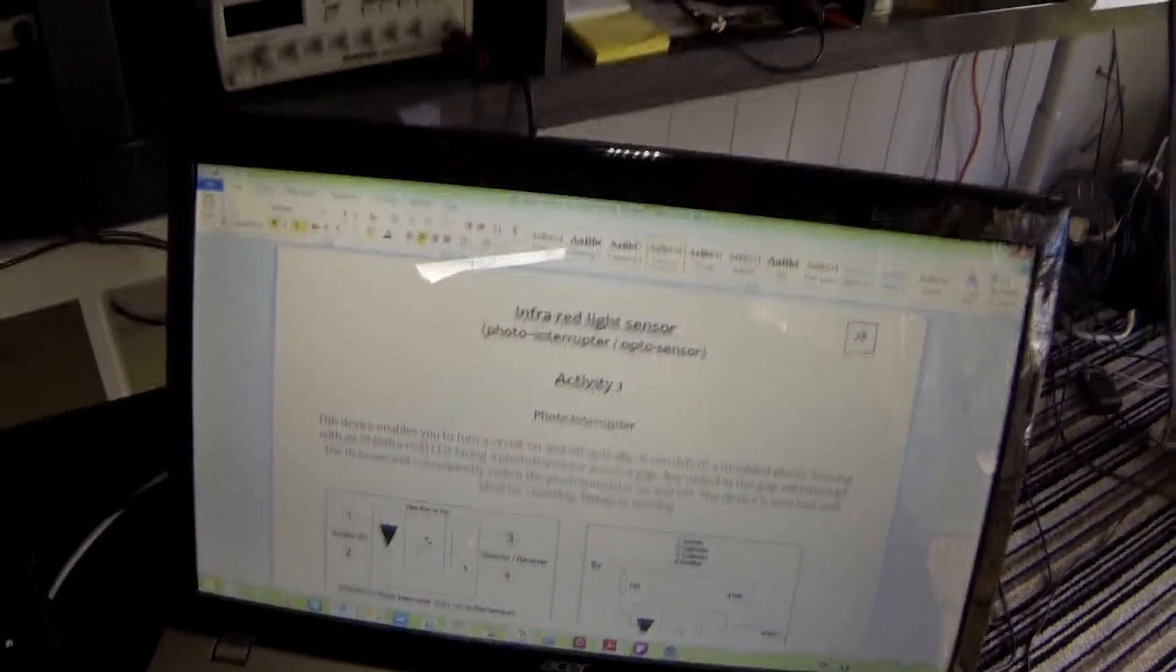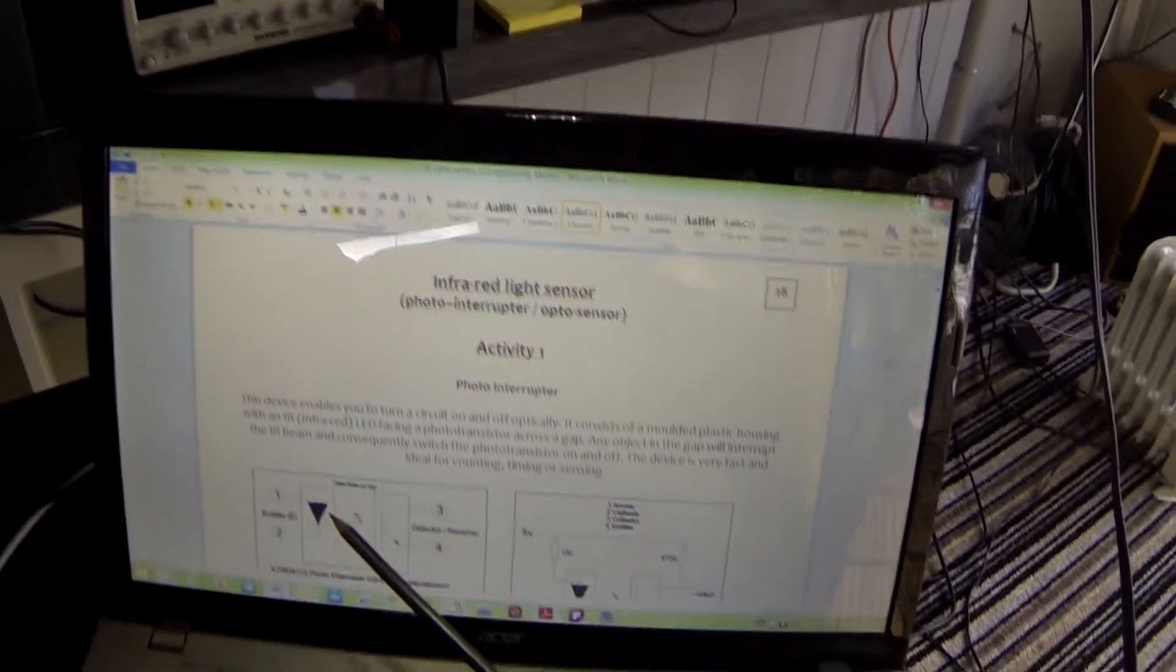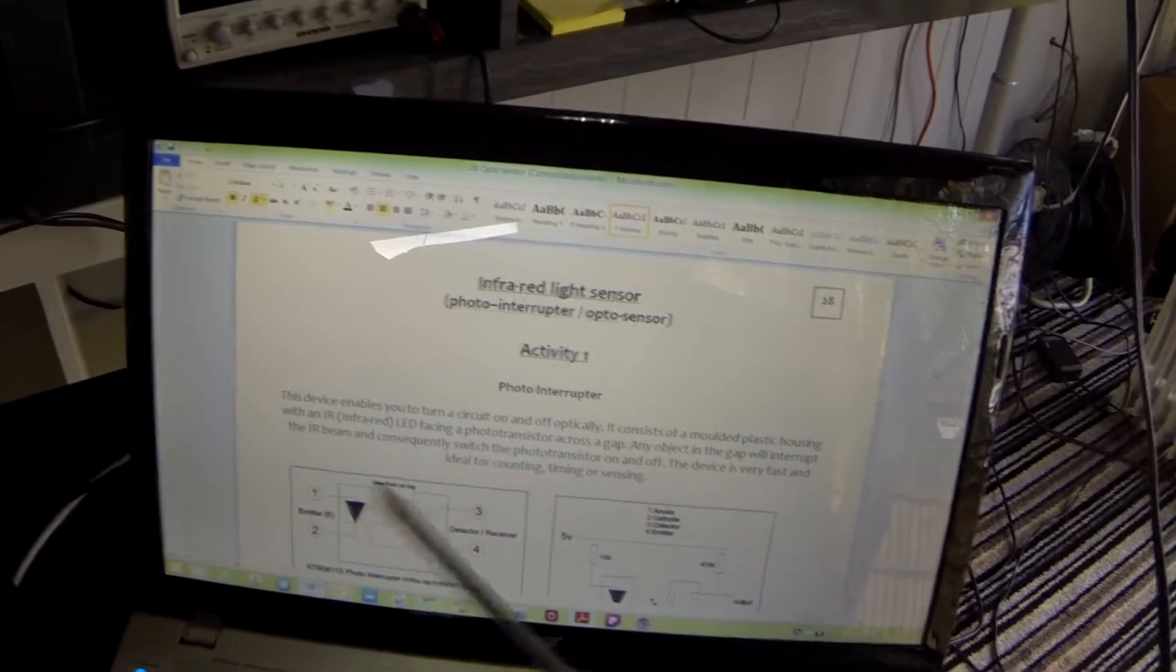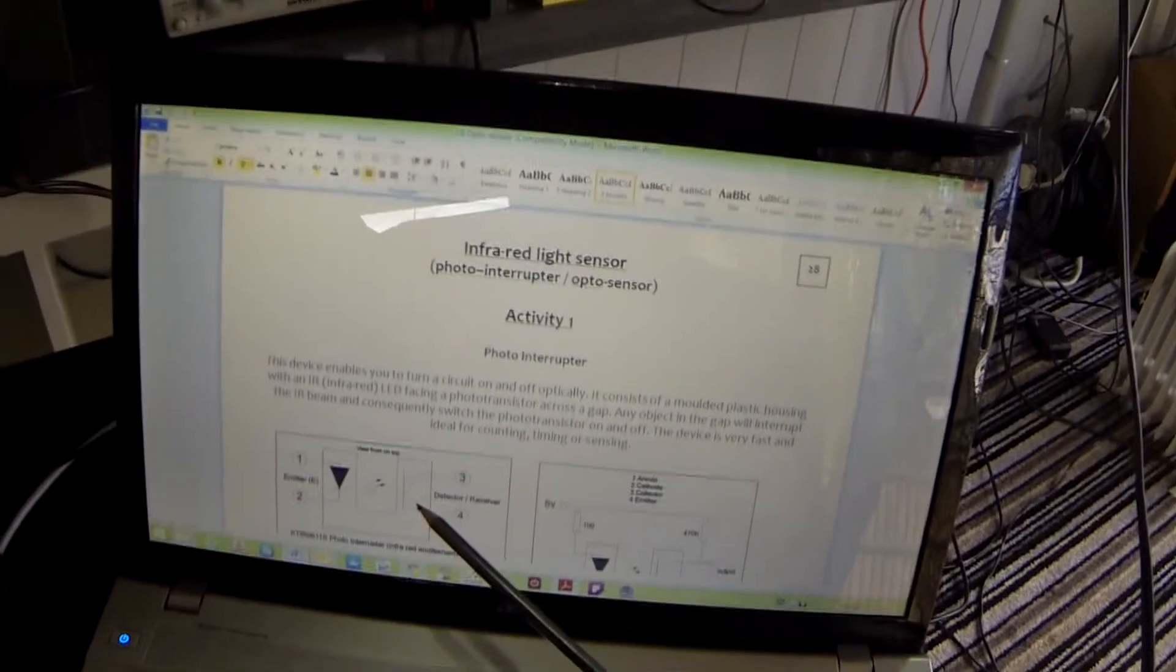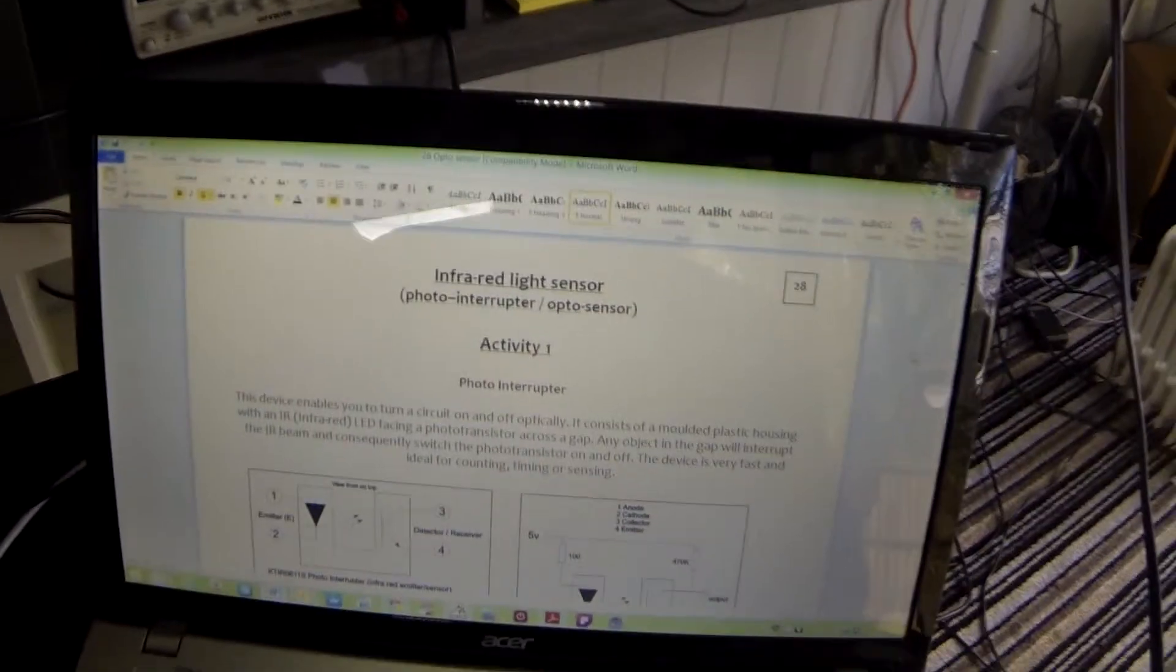Quite simply, they have two component parts. The first one is an infrared emitting LED and the second part is a transistor which is known as a phototransistor, photo being light so it's detecting the infrared light.